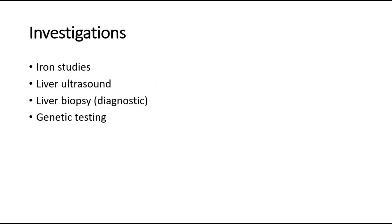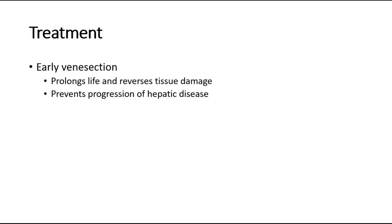To investigate for haemochromatosis, we can do iron studies to look for high transferrin saturation and high ferritin levels. Ultrasound of the liver is done to look for any signs of hepatocellular carcinoma, as it is the commonest cause of death. Liver biopsy is the diagnostic investigation to measure liver iron storage, and genetic testing as well. For treatment, early venesection, which is phlebotomy, is beneficial especially in those who have not developed diabetes or liver cirrhosis. It prolongs life, reverses tissue damage, and prevents progression of hepatic disease by removing excessive iron levels.